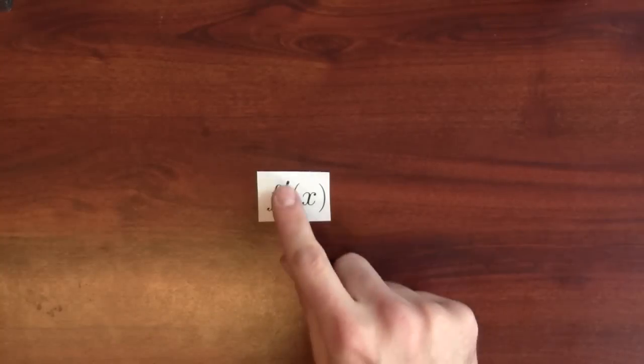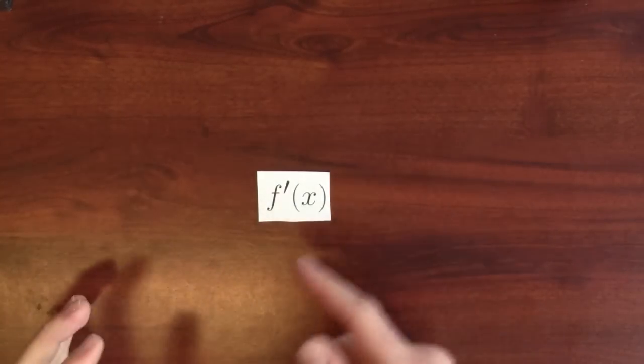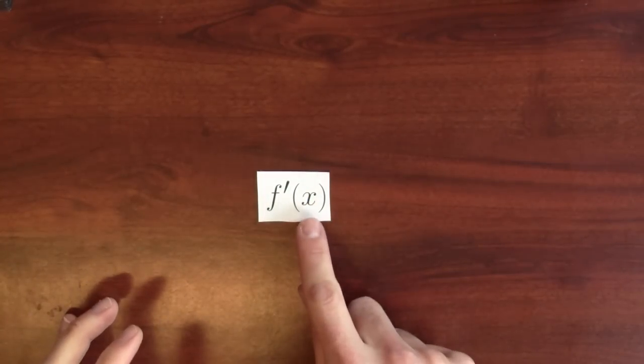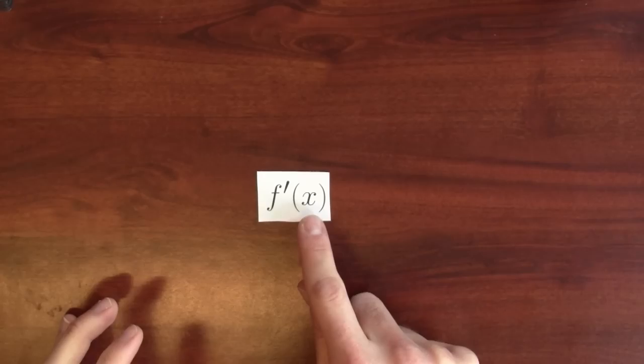The f'(x) notation doesn't emphasize that the derivative is a ratio, but it does emphasize the derivative is a function. When you use the f'(x) notation, at least you can tell this thing's a function. You've clearly labeled the input x. Differentiating gives a new function. Even the name suggests that. The derivative is somehow derived from the original function.